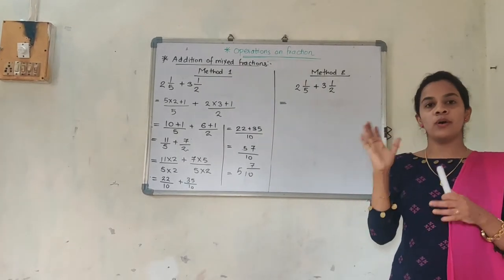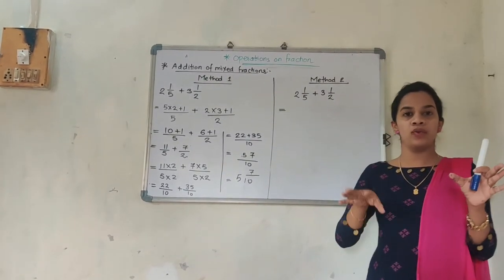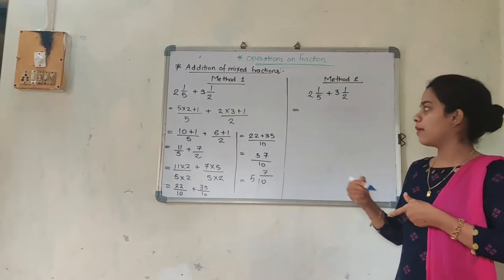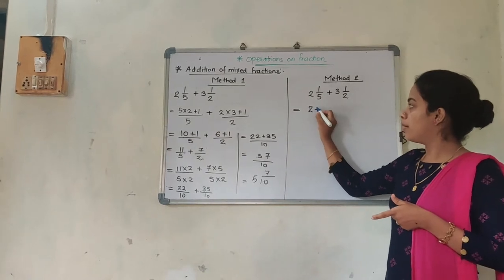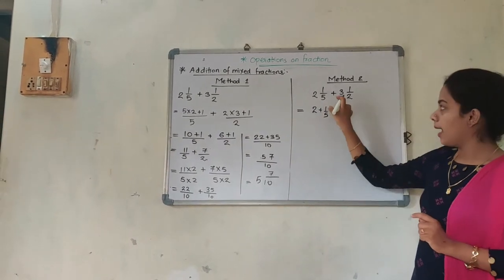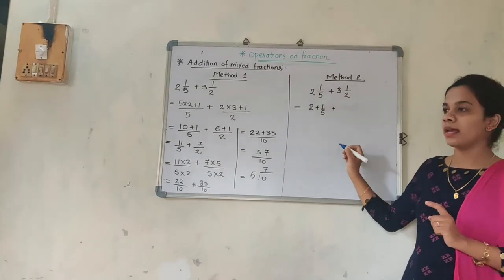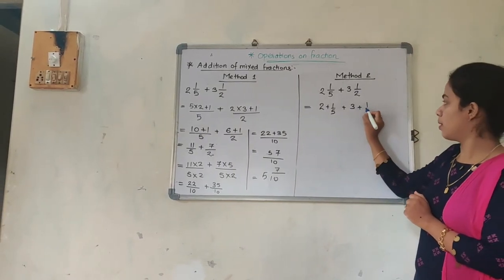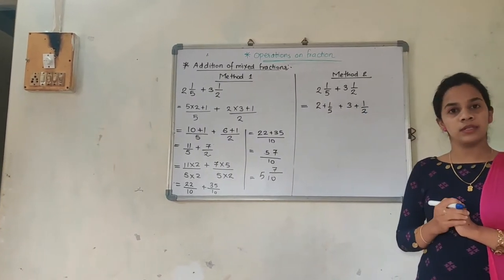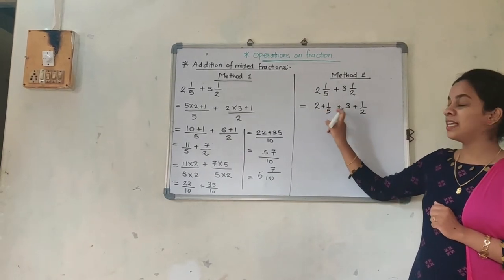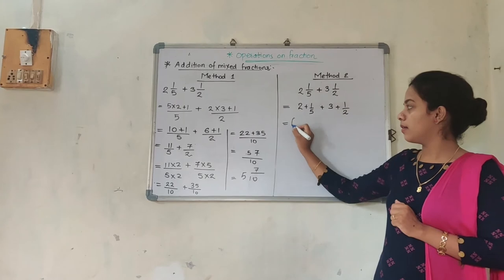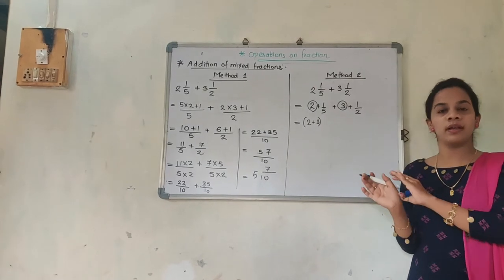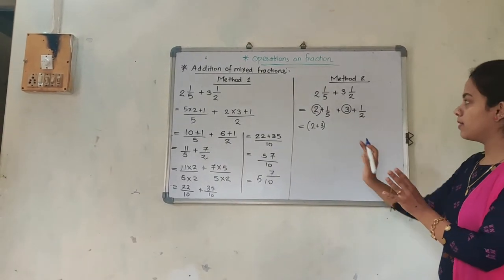Always remember: 2 and 1/5 can be separated as the integer part and the proper fractional part. So I write it as 2 plus 1/5, and similarly for 3 and 1/2 as 3 plus 1/2. Now I am going to take the integers together in one bracket — this 2 and this 3 — and take the fractions together in another bracket.